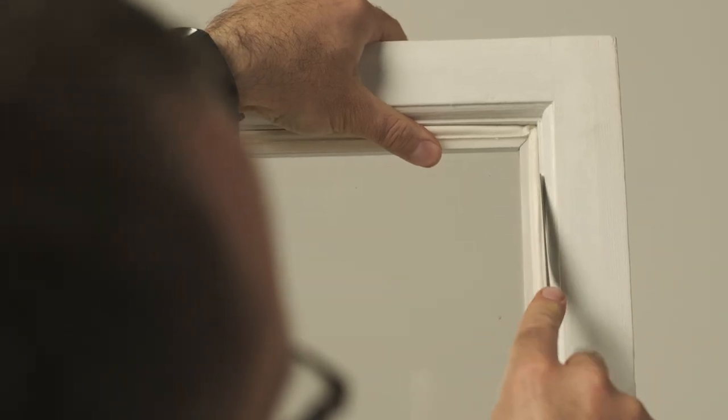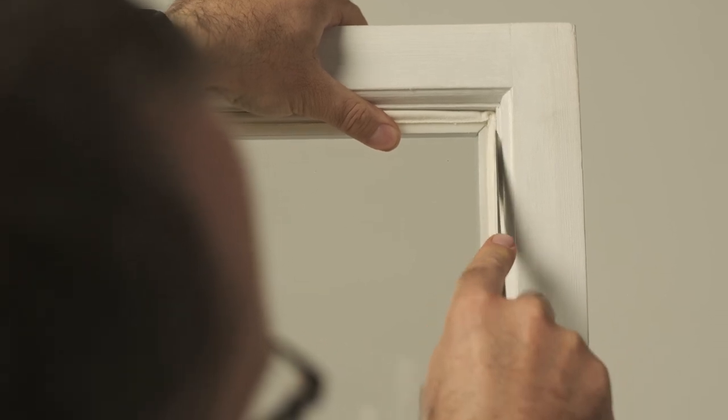At this point, the sponge might pop out at the corners. If so, just use a table knife to push it back and tidy it up.